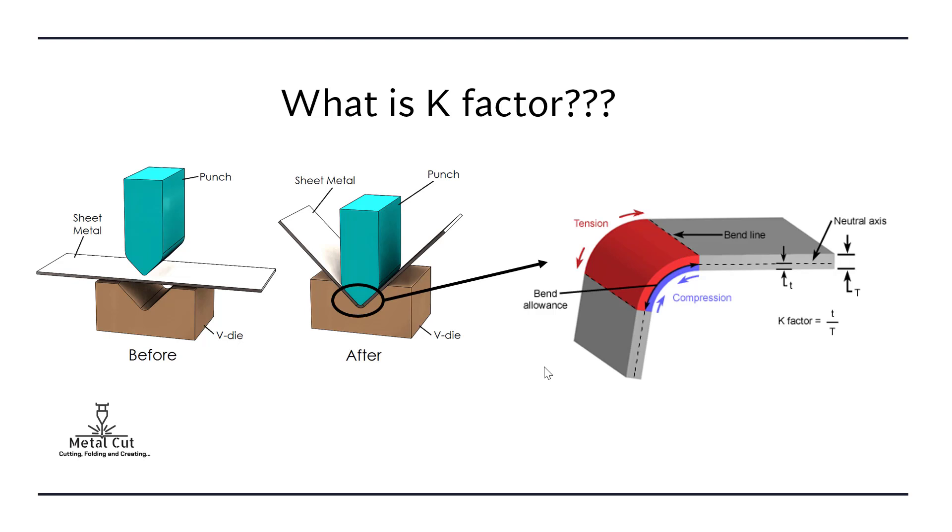What is K factor? When you have a flat sheet metal part, you will deform it by punching using the punch and V die. So this punch comes down and forms in the shape of the bottom V. Now when this deformation happens, right at this stage, if we zoom in and see what actually happens in the deformation...